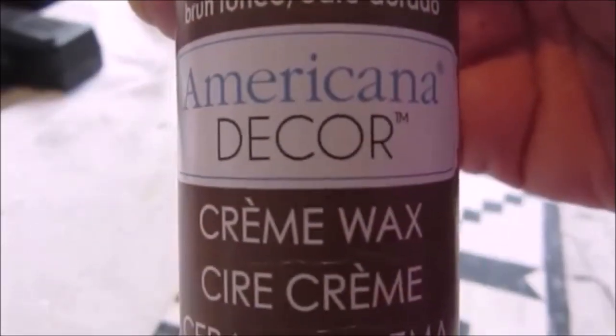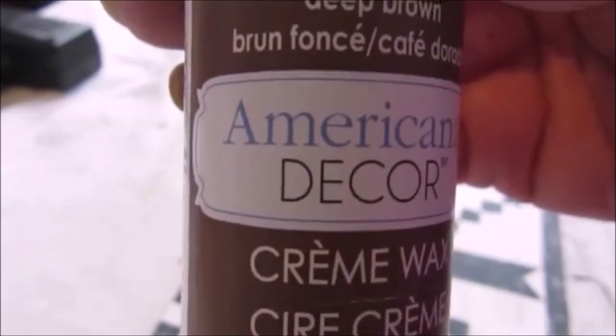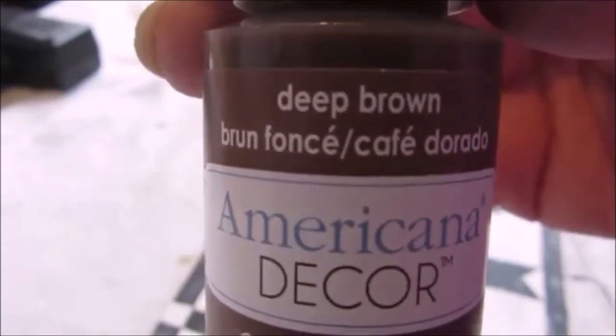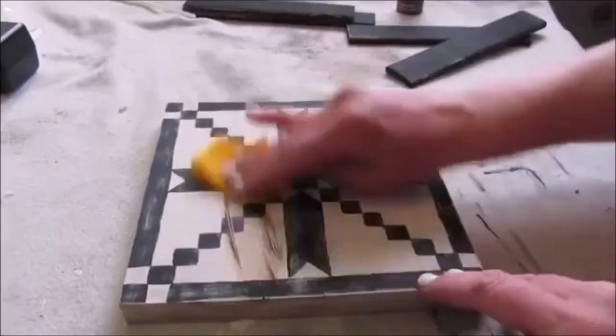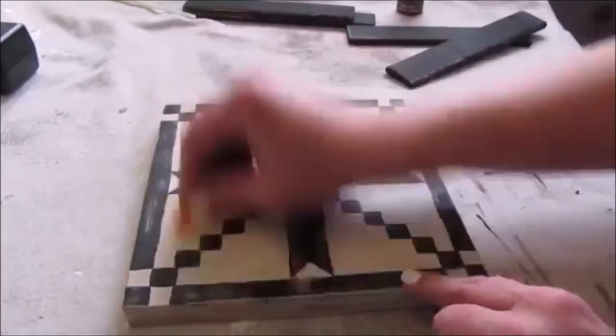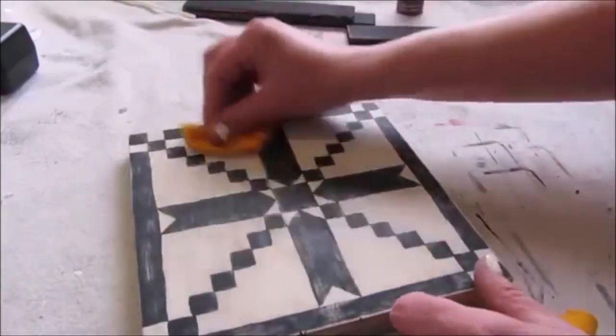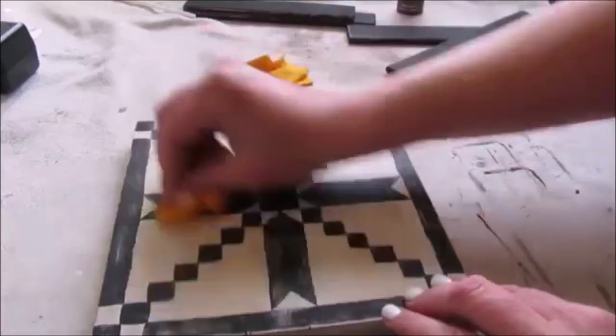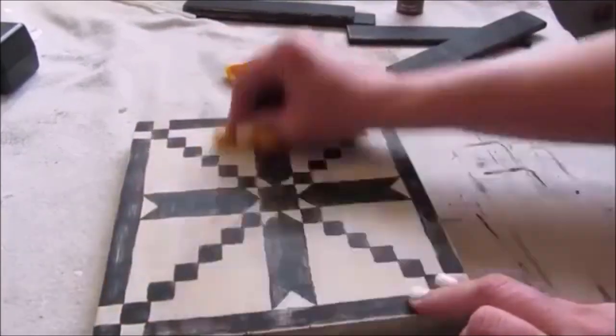To enhance the aged look, I used this cream wax by Americana Decor in the color Deep Brown. After pouring a small amount onto a clean t-shirt rag, I simply wiped it all over my design. I then used another piece of rag to buff out the wax.